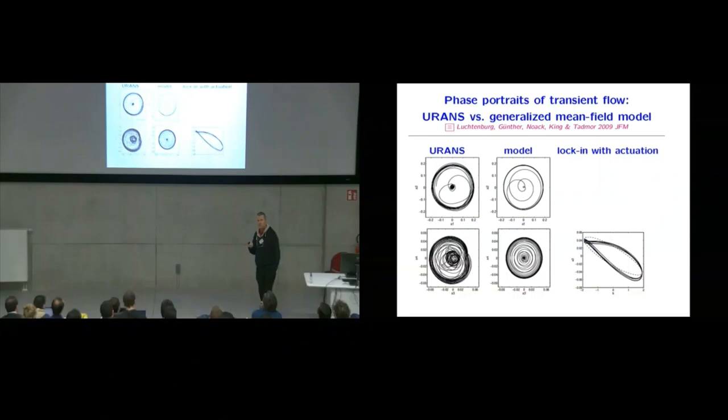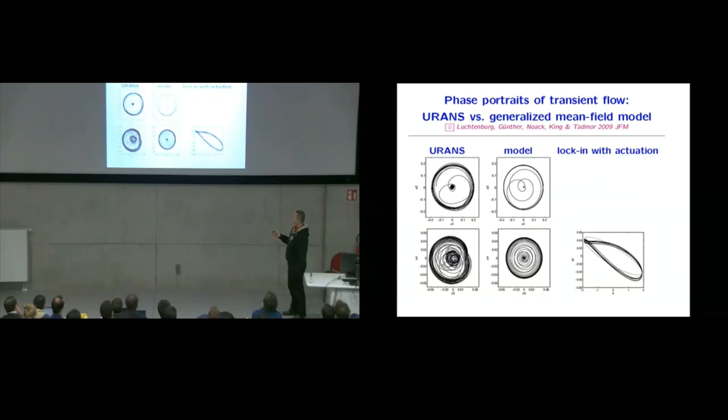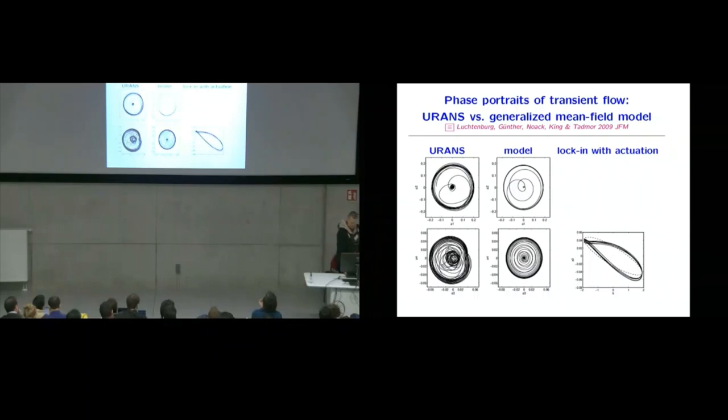And considering the simplicity of our model, this is already pretty impressive reproduction. There's one parameter which is extremely important. How does A3, so one of the modes, correlate with the actuation. So if you get the phase relationships wrong, of course your model will have to be poor. The dashed line corresponds to the model. And the solid line here corresponds to the original CFD data.